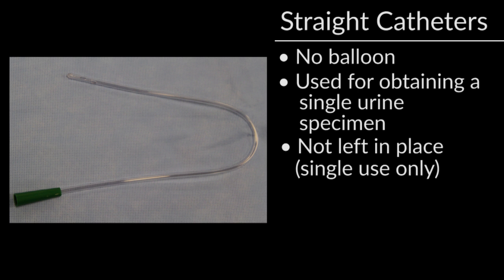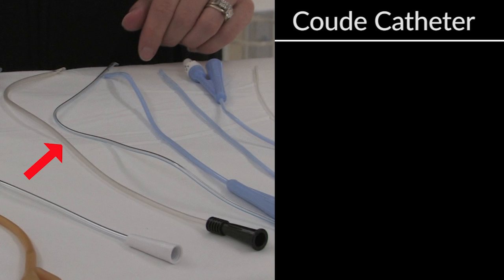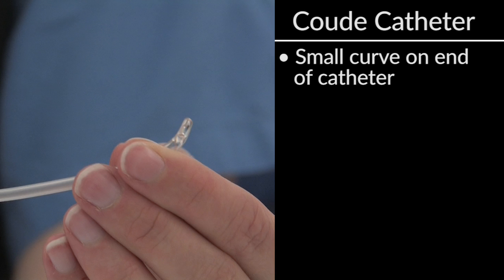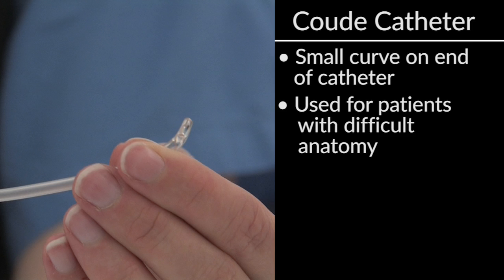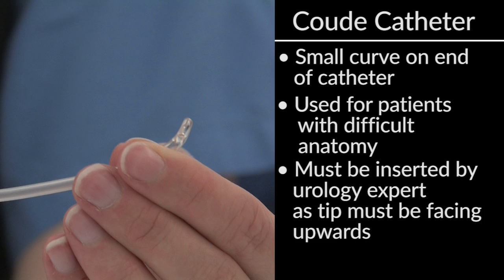Lastly, there are coude catheters. These have a very small curve on the end of the catheter and are used for very specific reasons, such as patients with difficult anatomy. Insertion of the coude catheter should be done by a medical professional who specializes in urology, as the tip must be facing upwards.